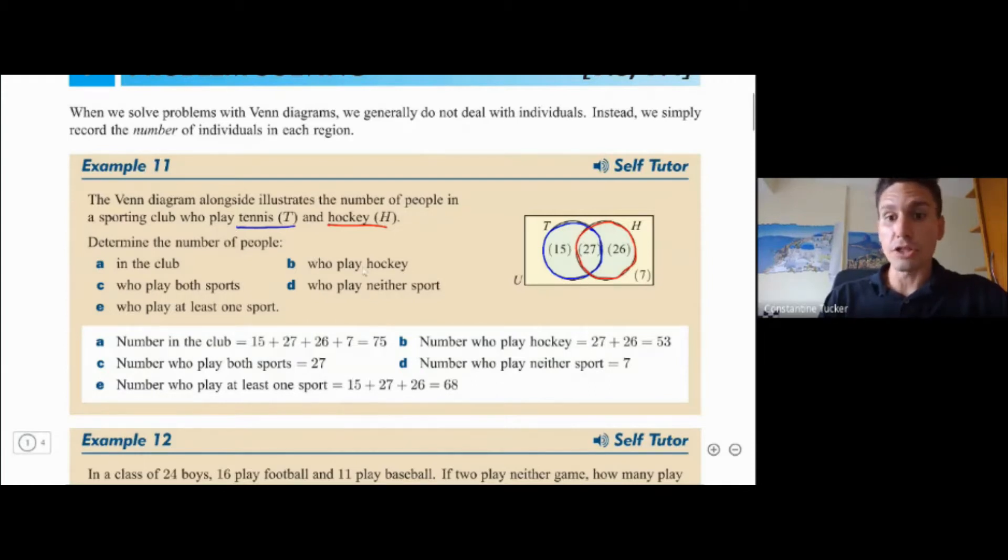How many people play hockey? So here this is where some students get confused. They look at this red circle which is hockey and they think we've got 27 here, we've got 26 here. What do they mean? Do they mean 26 or do they mean 26 plus 27? Well the answer here is 27 plus 26 because when we have the circle for hockey and they've asked how many people play hockey, they don't really care about whether these people also play tennis or not. They don't really care that this part is also another circle. All they've said really is how many people are in the red circle. So you just add up the 27 and the 26 so you get 53.